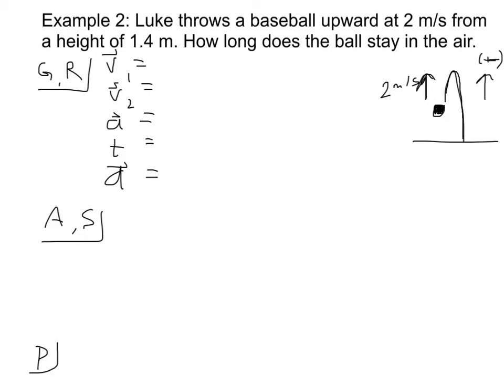So let's pull out our given and required here. So he throws it upwards at 2 meters per second. So I'm putting in here V1 is positive 2 meters per second. And we have a height of 1.4 meters. And that's where his initial throw is from. So this distance here is 1.4 meters. And in the end, the ball ends up down here. This is our finishing position.